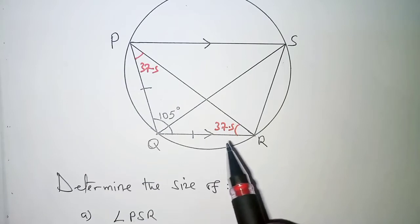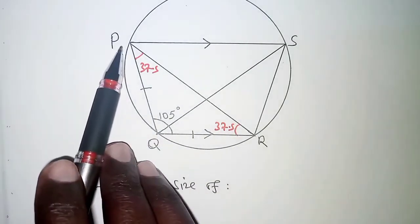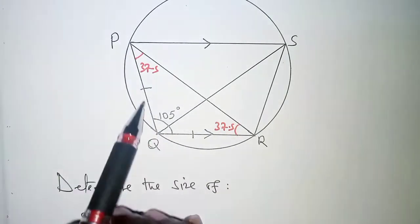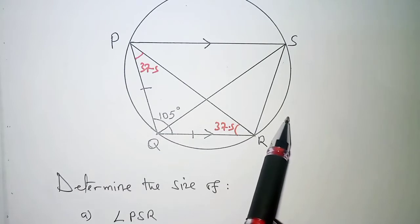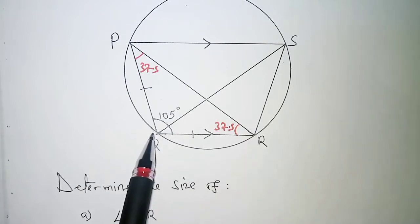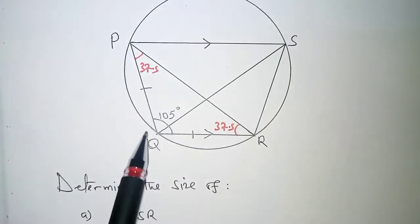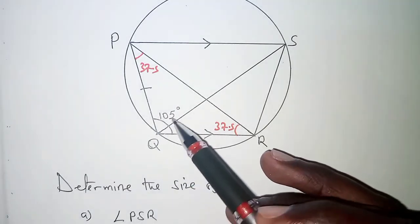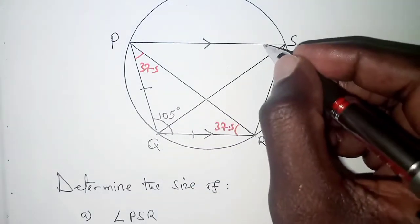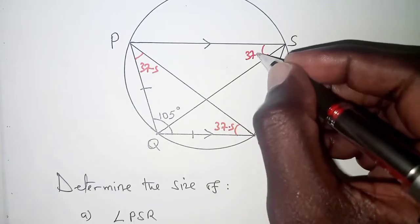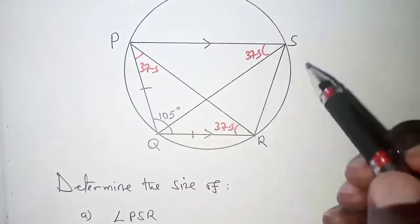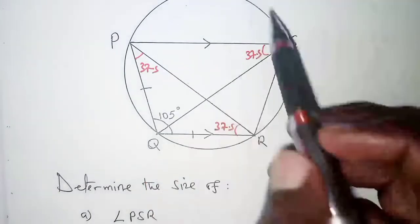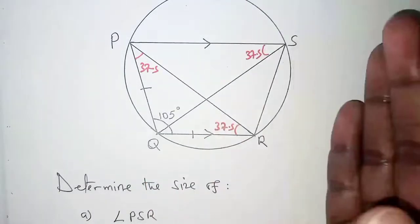Another thing we need to take note of here is that we have this chord PQ and chord PQ subtends angle 37.5 at point R on the circumference. Then we will also have the same chord PQ subtending the same angle which is 37.5 at point S so long as the two angles are on the same segment so this side of PQ.